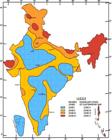The Indian subcontinent has a history of devastating earthquakes. The major reason for the high frequency and intensity of the earthquakes is that the Indian plate is driving into Asia at a rate of approximately 47 mm per year. Geographical statistics of India show that almost 54% of the land is vulnerable to earthquakes. A World Bank and United Nations report estimates that around 200 million city dwellers in India will be exposed to storms and earthquakes by 2050.